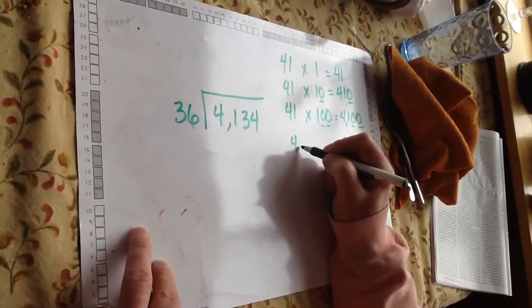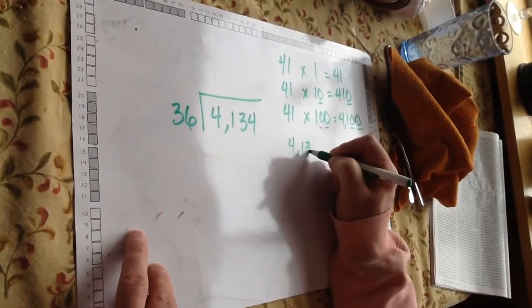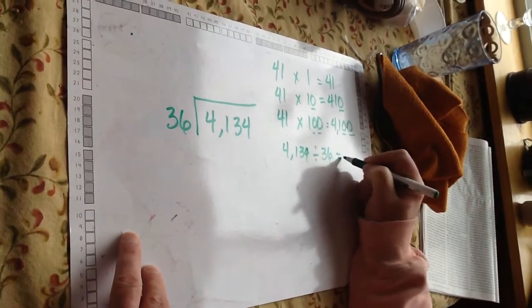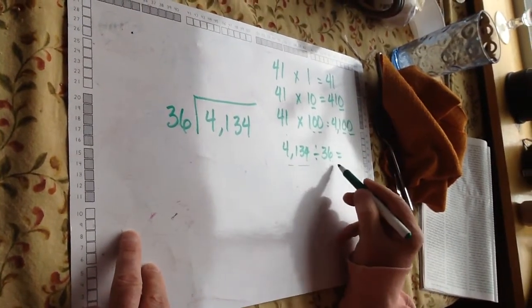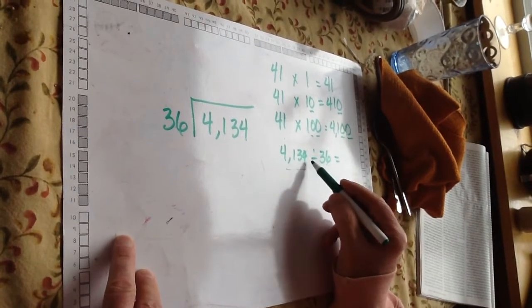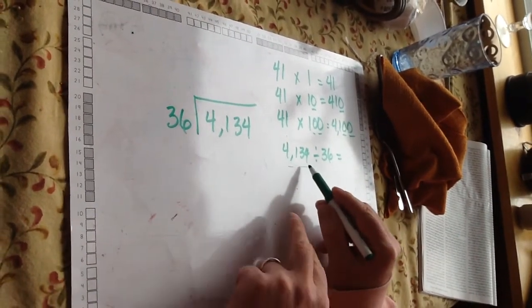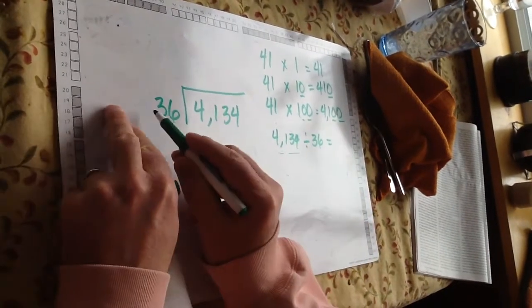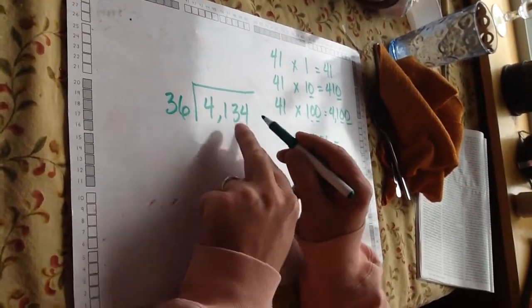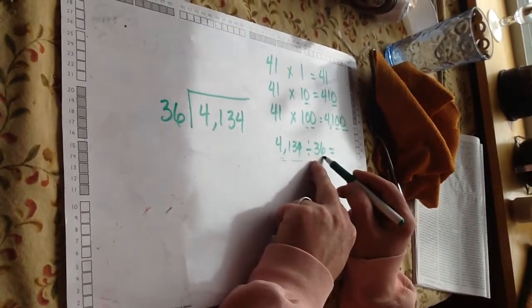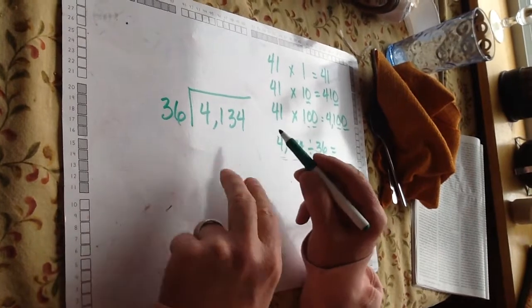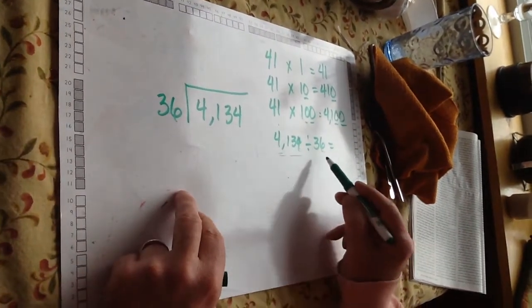This number, 4,134 divided by 36, can be written out in this form. You have to remember, though, that when you're dividing, this number does not go outside the box. This is the number that goes in the box. This is your divisor over here. Sometimes people get that backwards, but now you'll know.